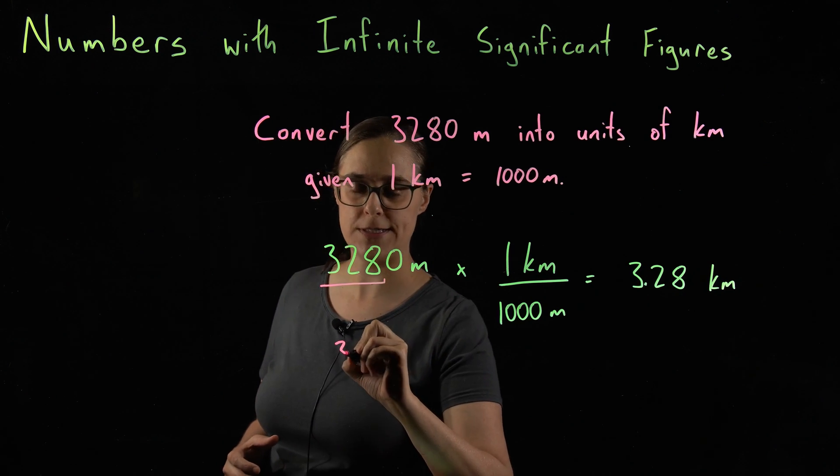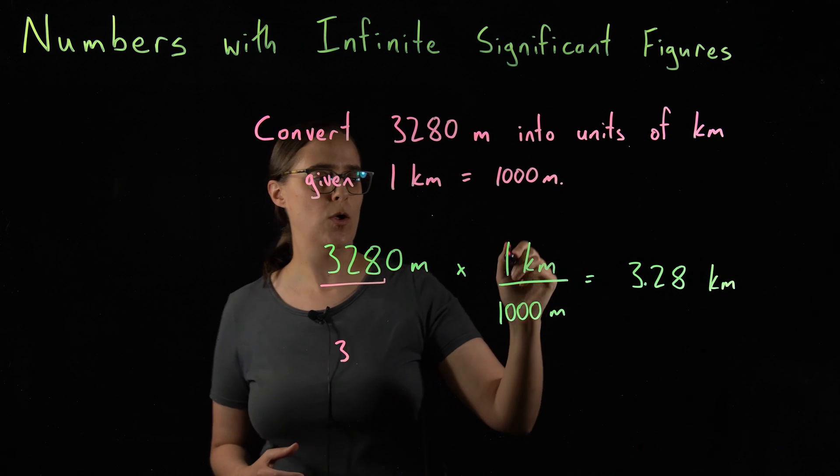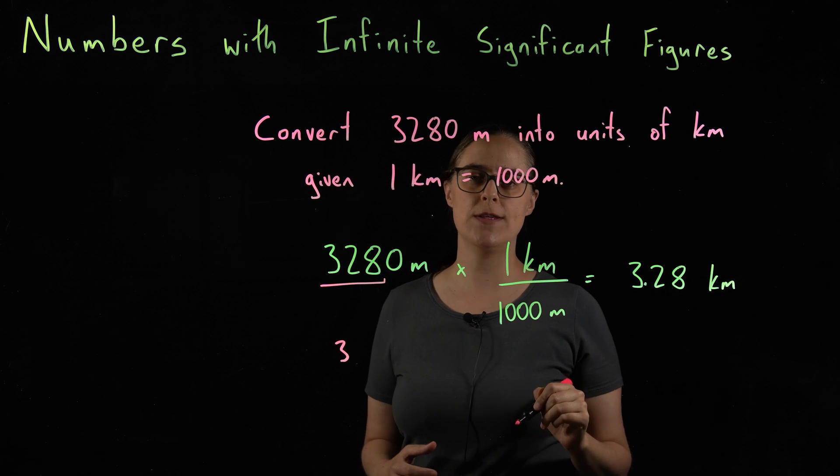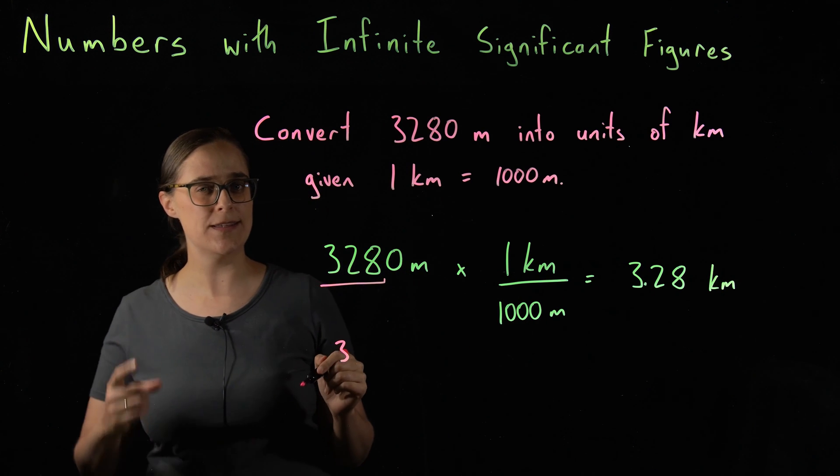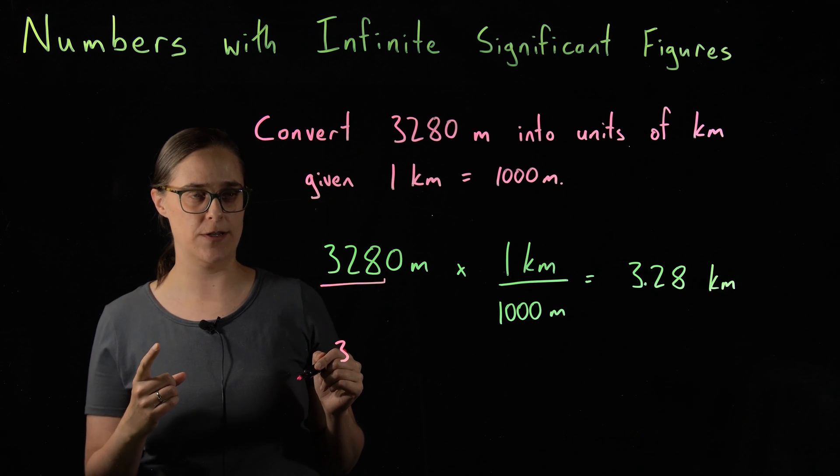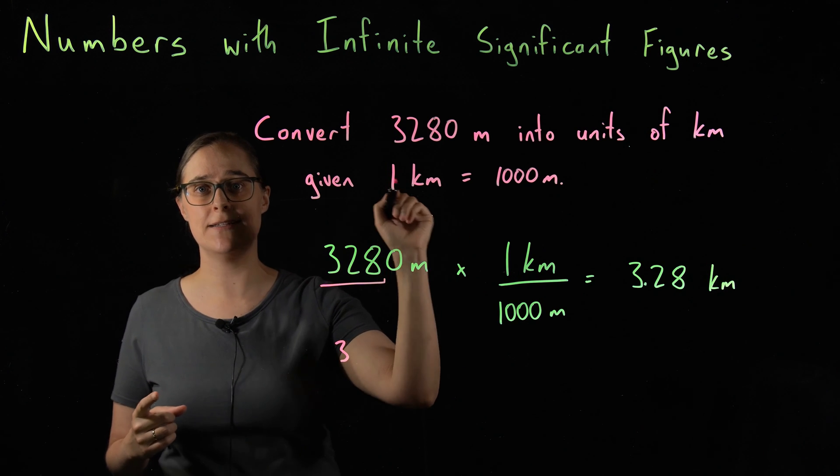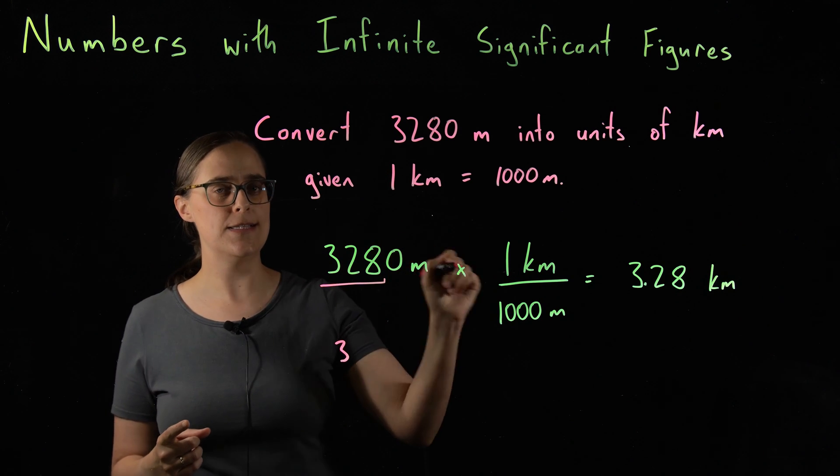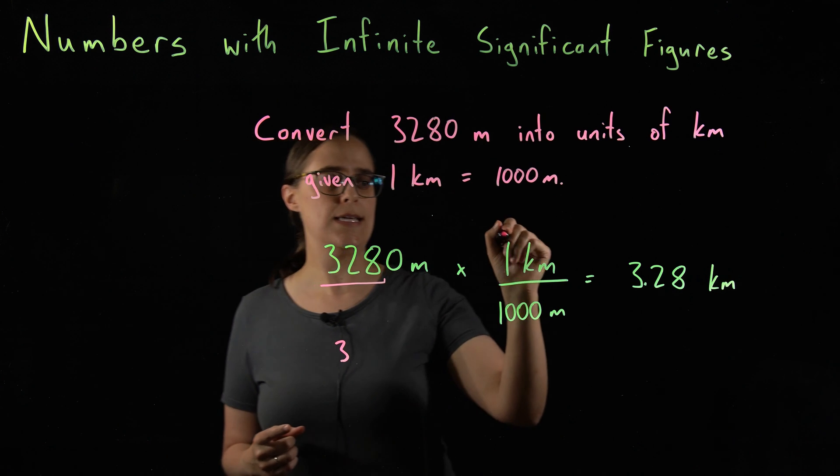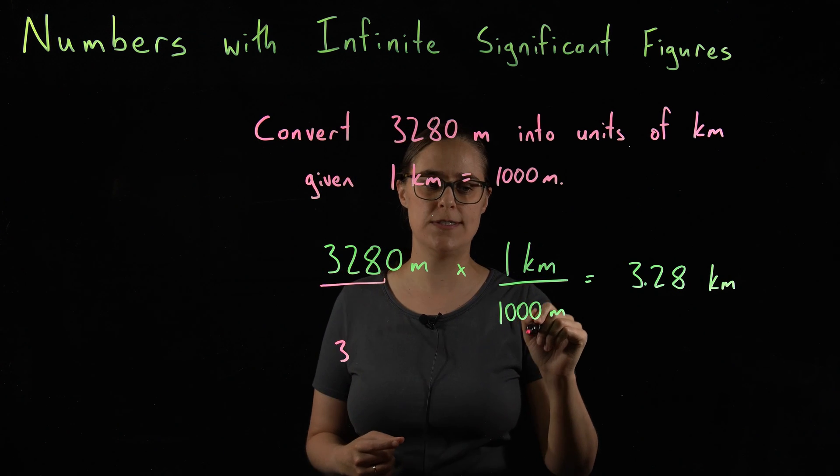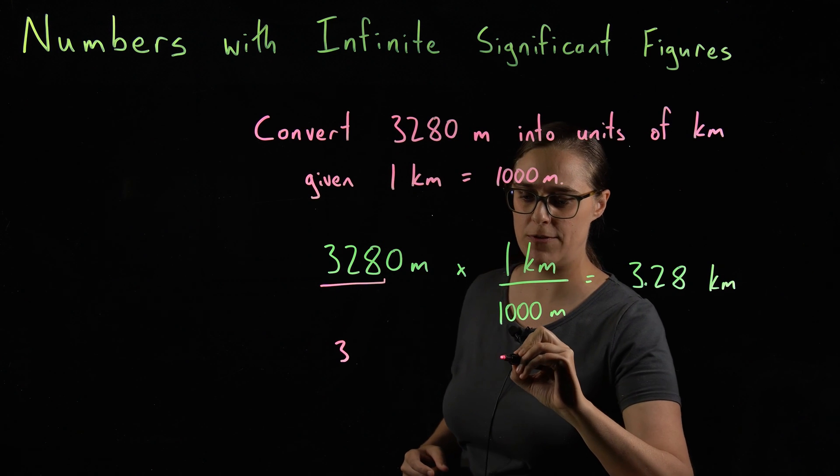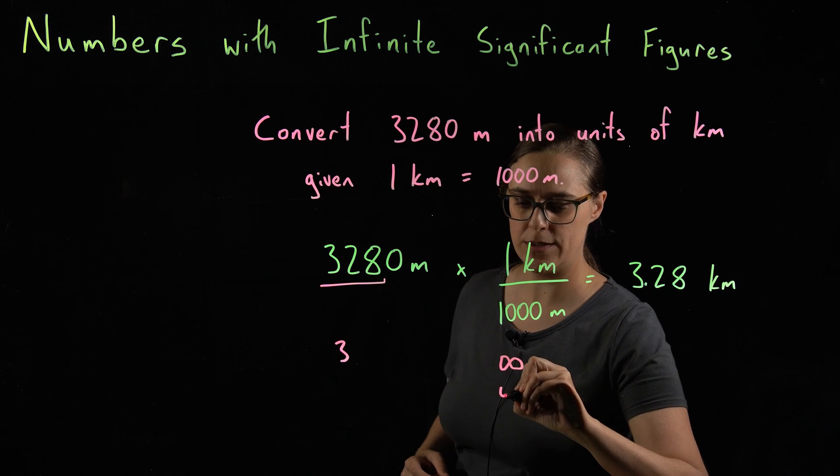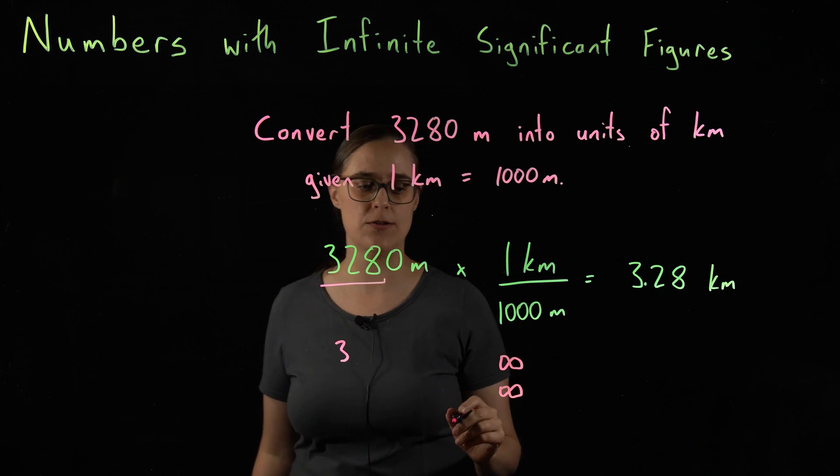So we have to determine how many significant figures are in each of these numbers first. 3280 is written with three significant figures, 1 kilometer and 1,000 meters. These two numbers look like they are written with one significant figure, but we are dealing with exact definitions here. This is what this video is about. Even though these look like they have one significant figure, they each have an infinite number of significant figures, because one kilometer equals exactly 1,000 meters.